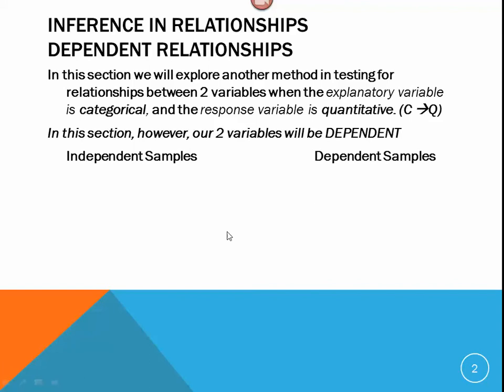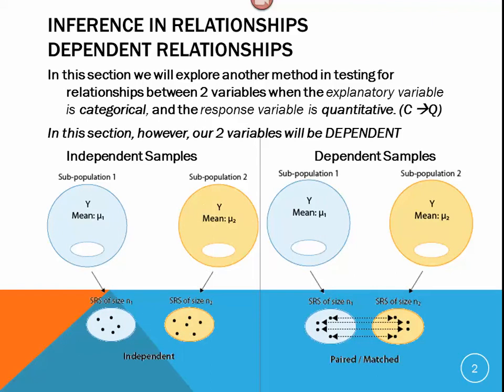In this section, we're going to explore another method for testing relationships between two variables when the explanatory variable is categorical and the response variable is quantitative. However, our two variables will be dependent. If you remember back to the picture we looked at previously when we were talking about independent samples, there were completely two different samples that really were separate, had no relationship with each other except for some defining difference between the two. In an independent situation, we're dealing with two different sets of people or things.